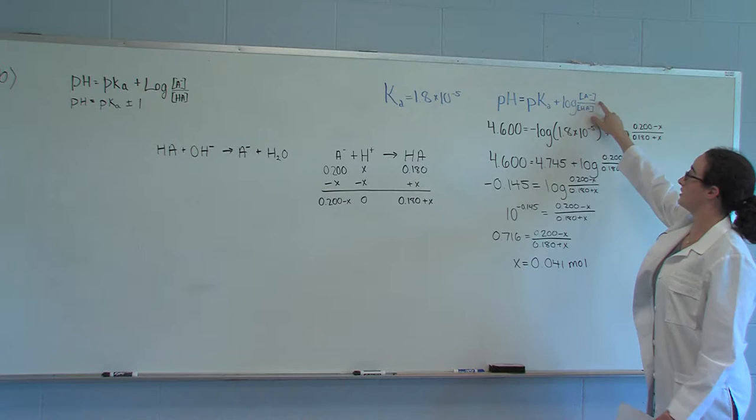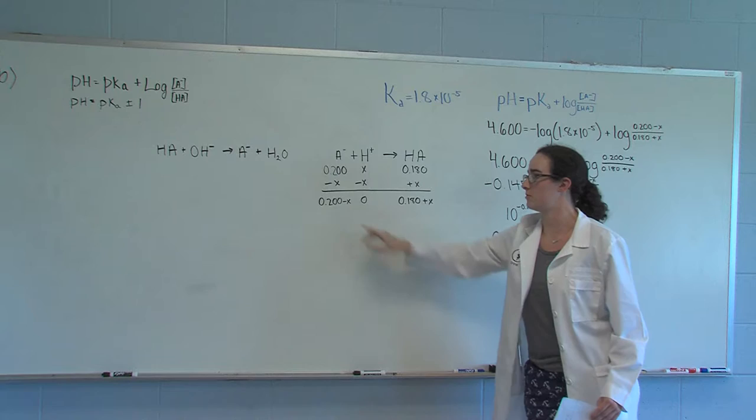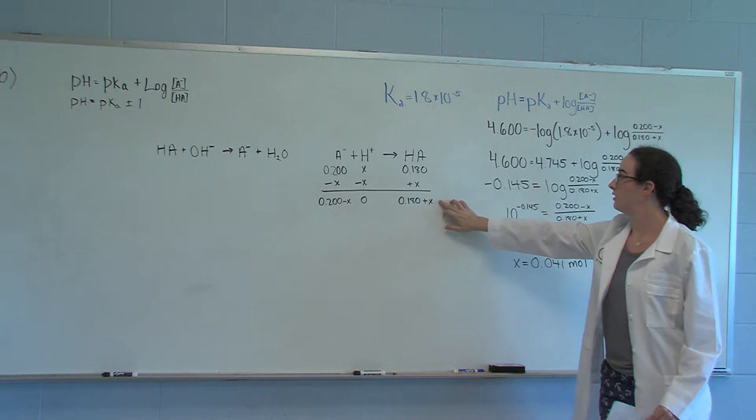For the concentration of A minus, we can put in .200 minus X, which we get from the RICE table shown here. For the concentration of HA, we get .180 plus X, which is what we get here.